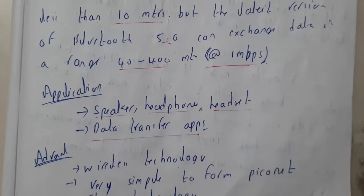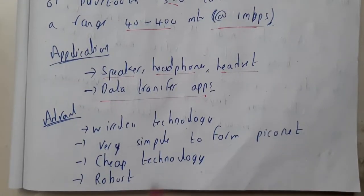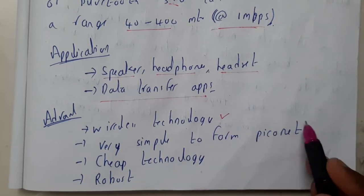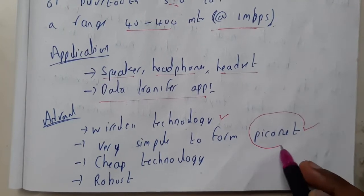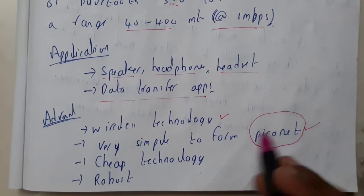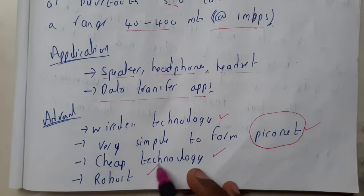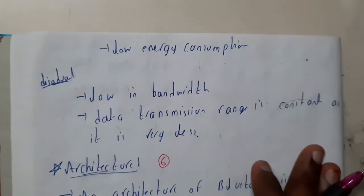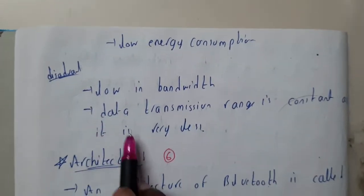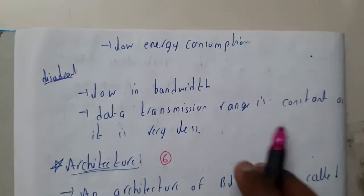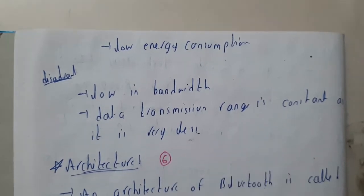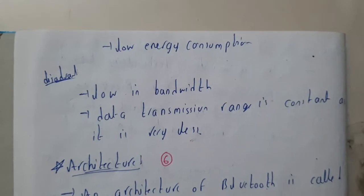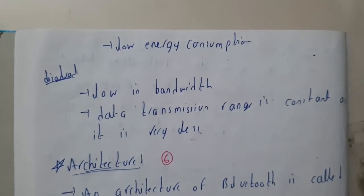The advantages are that we can use wireless technology in an efficient manner and it is very simple to form a Piconet — we will be discussing the Piconet concept in the next tutorial. Bluetooth is also one of the cheapest technologies and is robust. The disadvantages are that it has a really low bandwidth and the data transfer rate is constant and very low. In the next tutorial, we will be going through the architecture of Bluetooth. Thank you for watching.